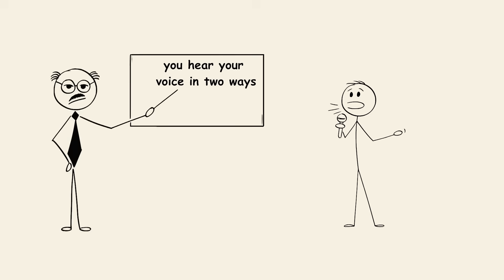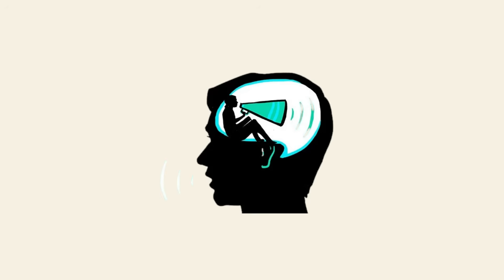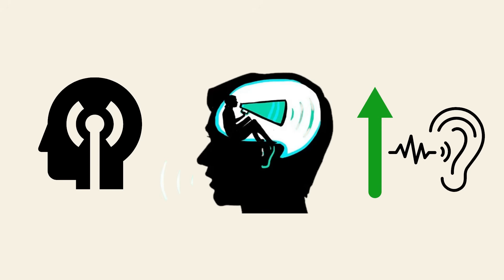When you speak, you hear your voice in two ways: one through sound waves traveling through the air and into your ears, and the other through vibrations in your skull. The sound you hear in your head is richer and deeper, because the bone conduction enhances the lower frequencies.